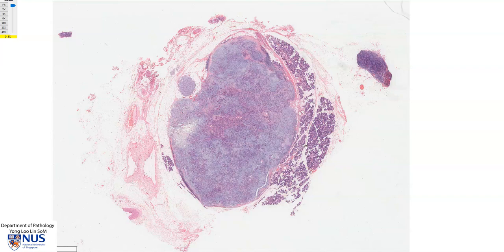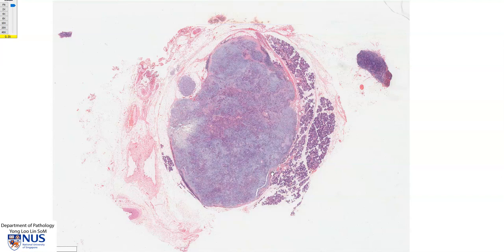Hello, this is a virtual microscopy slide of a pleomorphic adenoma of the parotid gland. I'm just going to outline the tumour here. This is a fairly well-demarcated tumour nodule. In some areas, for example near this inferior aspect, there is a fibrous capsule around it, but in other areas it's just well-demarcated.